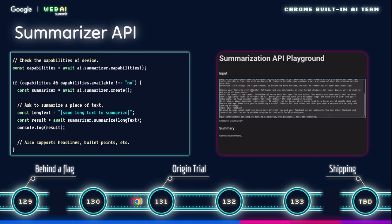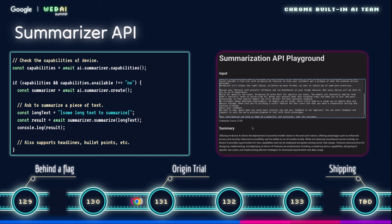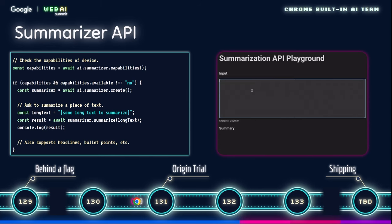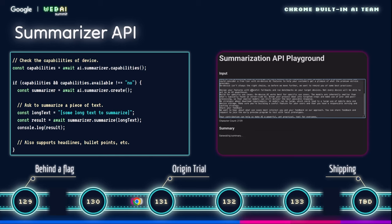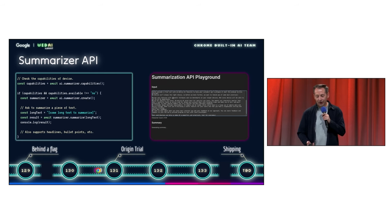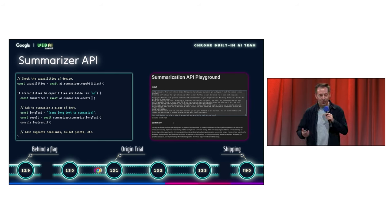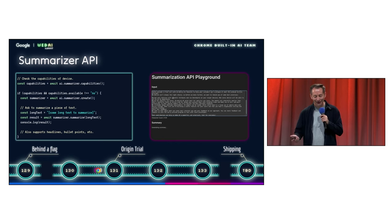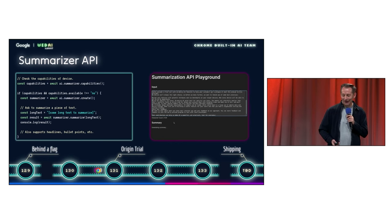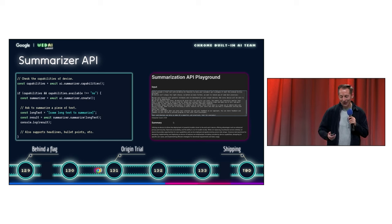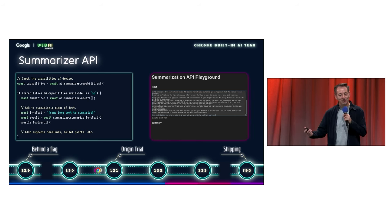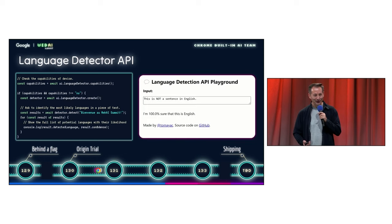Next up, the summarizer API. As the name implies, this is great for condensing long text into bite-sized summaries — perfect for TLDRs, bullet points, headlines, you name it. This has been ready for prototyping since Chrome 129, and we want to do an origin trial in Chrome 131. It kind of helps with the Google mission of making information universally accessible and useful.